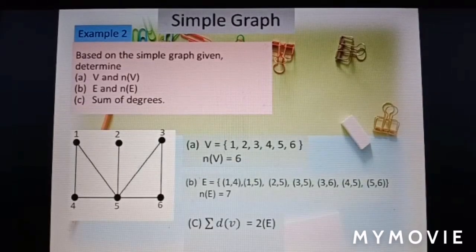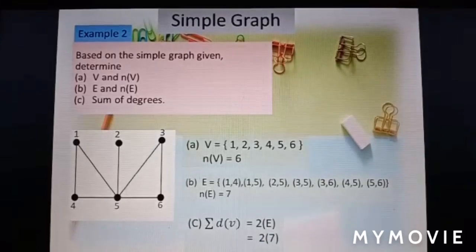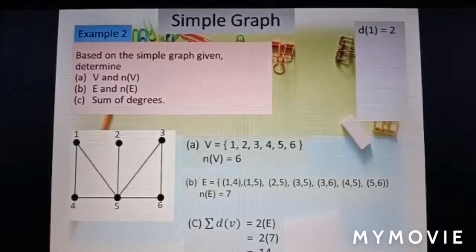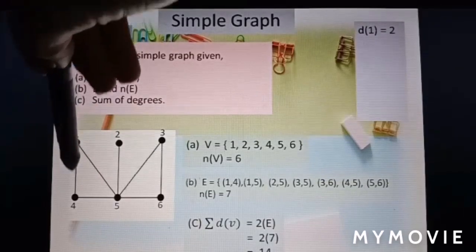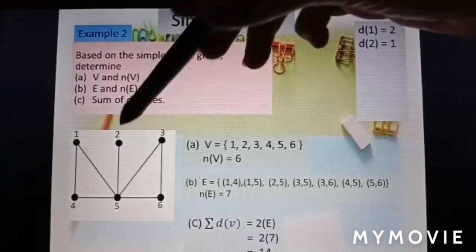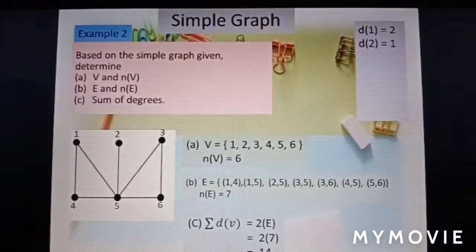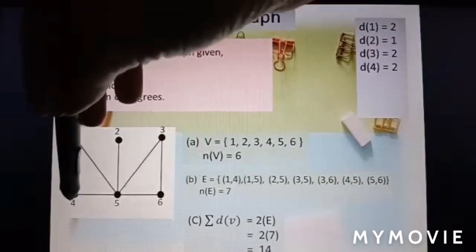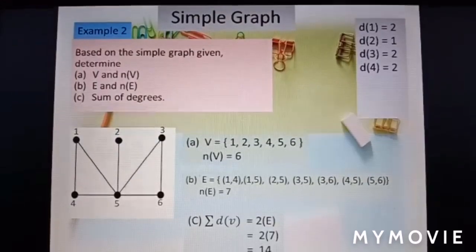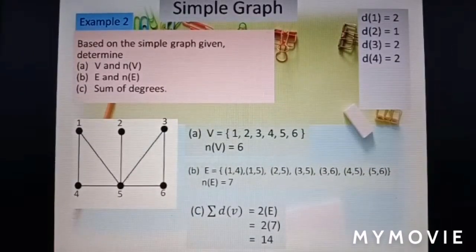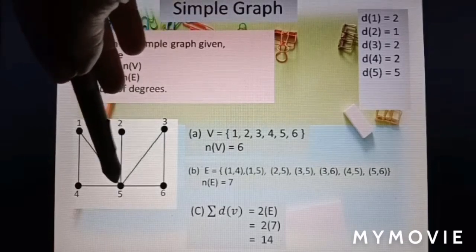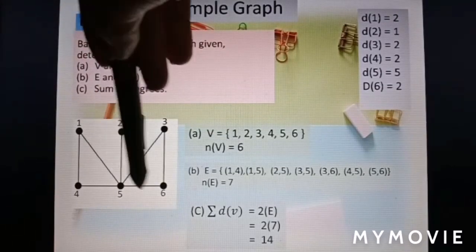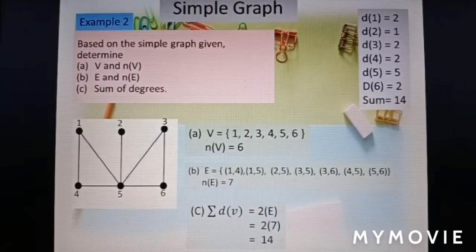Sum of degree is equal to 2 times number of edges. So 2 times 7 equal to 14. Let us see why we get 14. Degree 1 is equal to 2: 1, 2. Degree 2 here is equal to 1. Degree 3, we have 1, 2. Degree 4, we have 1, 2 also. Degree 5, we have 1, 2, 3, 4, 5. And degree 6, we have 1, 2. And the sum is 14.